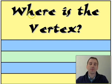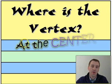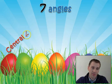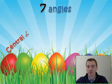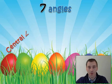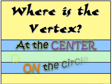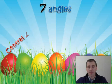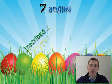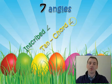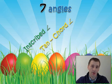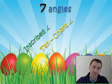Remember on our foldable, here's what we've done so far. Where is the vertex? We talked about the ones where the vertex is at the center — that was the central angle, and its measure was equal to the measure of the arc. Then we covered where the vertex is on the circle: the inscribed angle and the tangent-chord angle, both equal to half the intercepted arc.